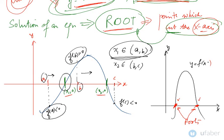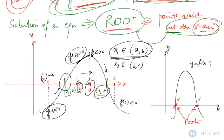If the sign does not change — whether positive to positive or negative to negative — there will be no root in that interval. For example, taking another point D where f(D) is also positive, similar to point B, there is no root between B and D because the graph is not changing sign. It has to intersect the x-axis to have a root. The sign change must occur in the interval for a root to lie within it.